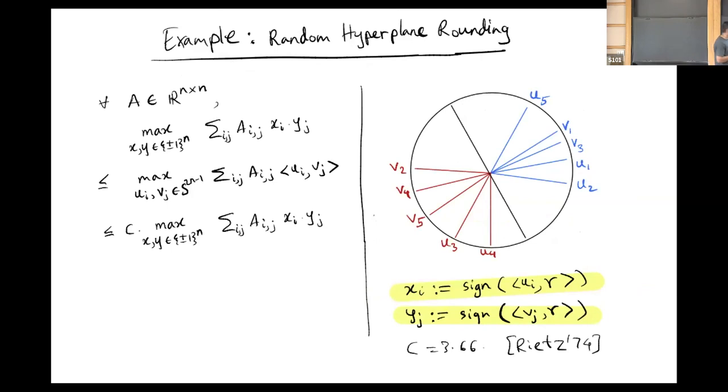Here's an example of such a map that achieves constant factor approximation. You look at these vectors UIs and VIs on the sphere and you sample a random hyperplane through the origin. All the guys on one side get plus one and all the guys on the other side get minus one. More formally, we set XI to be the sign of UI inner product R and YJ to be the sign of VJ inner product R, where R is a random unit vector from the sphere. It turns out this gets a constant factor approximation of 3.6.